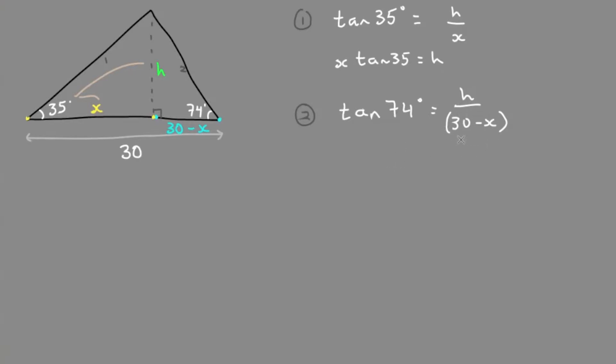Now we'll cross multiply 30 minus x out in front. Keep that in parentheses. So 30 minus x times the tan of 74 equals h.